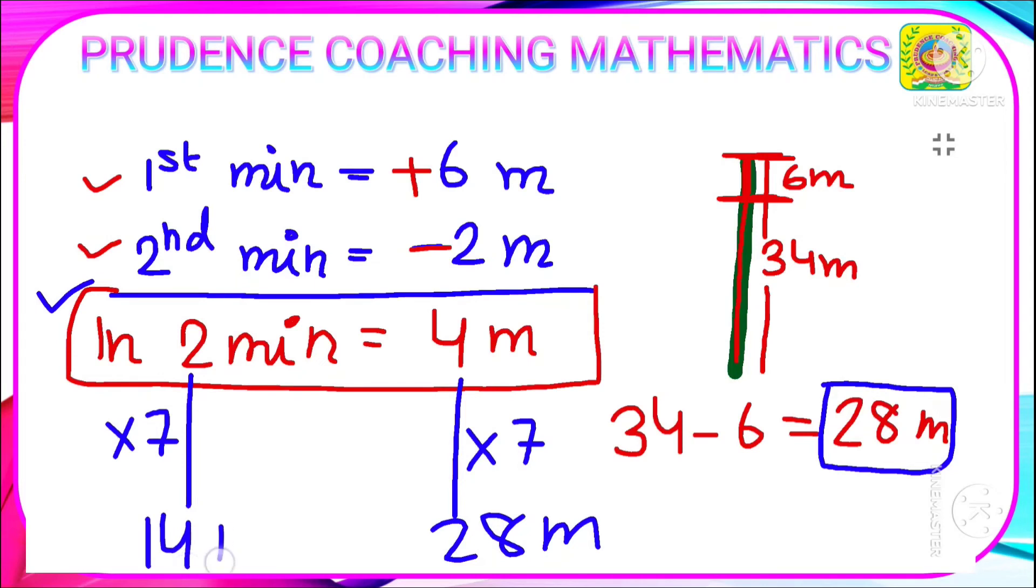So 7 times 2 is 14 minutes. So in 14 minutes, the monkey will cover 28 meters, and the last 6 meters it will cover in 1 minute. So total time taken by the monkey will be 14 plus 1, that is 15 minutes.